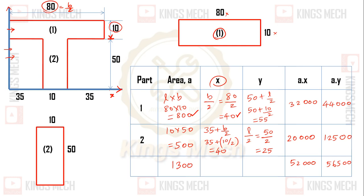The flange reaches 50 mm, so we need to cross this 50 mm. Then 50 plus l by 2, where that length is 10. So 50 plus l by 2 gives the y-axis distance. The area multiplied by x: a into x gives 8 fours are 32, so 32,000. A into y gives 440, with double zero — so ax and ay values are computed.